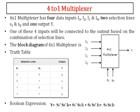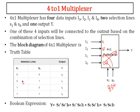To explain this circuit: if S1 S0 = 0,0 then input I0 is selected and goes to output. If S1 S0 = 0,1 then I1 is selected and goes to output. If S1 S0 = 1,0 then I2 is selected. If S1 S0 = 1,1 then I3 is selected and I3 goes to output Y.